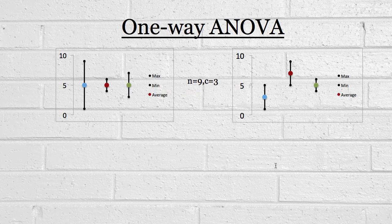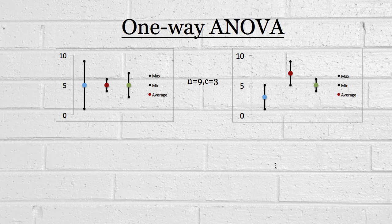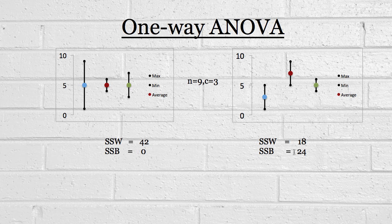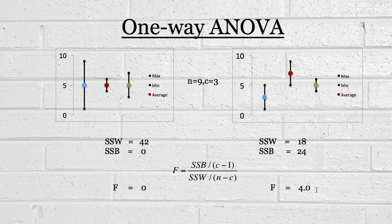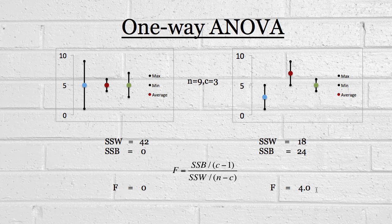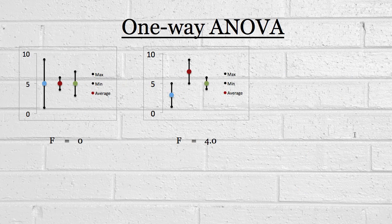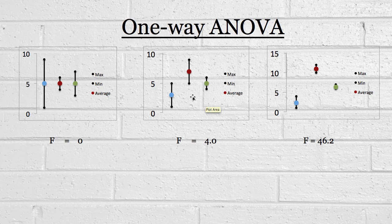So here we have a comparison of those F statistics created for that first and second example. The first one, we had SSW 42 and SSB 0. In that more recent example, we had 18 and 24. So if we use that calculation for F, we get an F statistic of 0 for the first example and an F statistic of 4 for the second example. As the means get further apart from each other, our F statistic is going to increase. So if they're even further apart than the previous example, we're going to get an even higher F statistic.